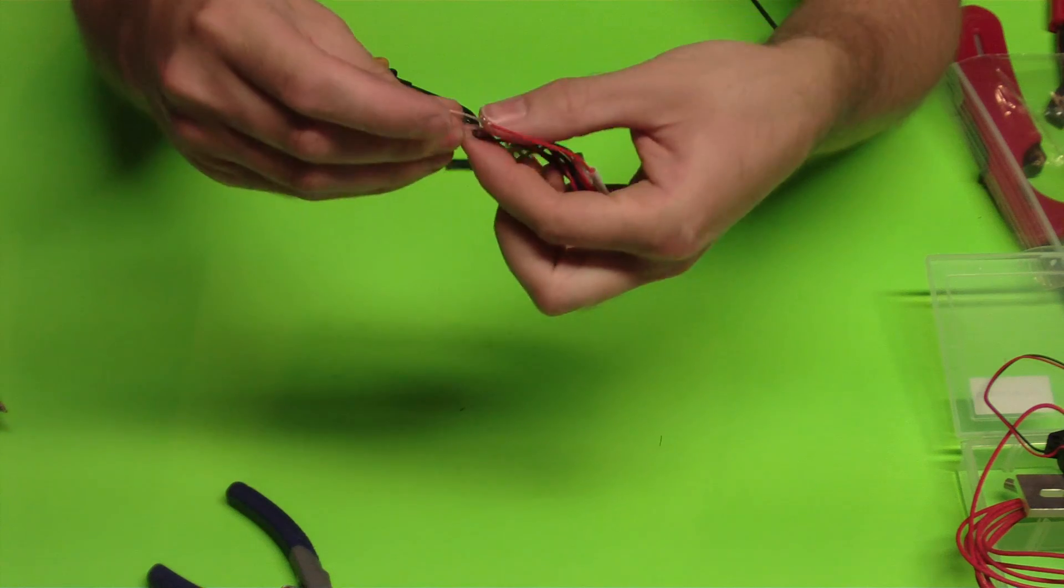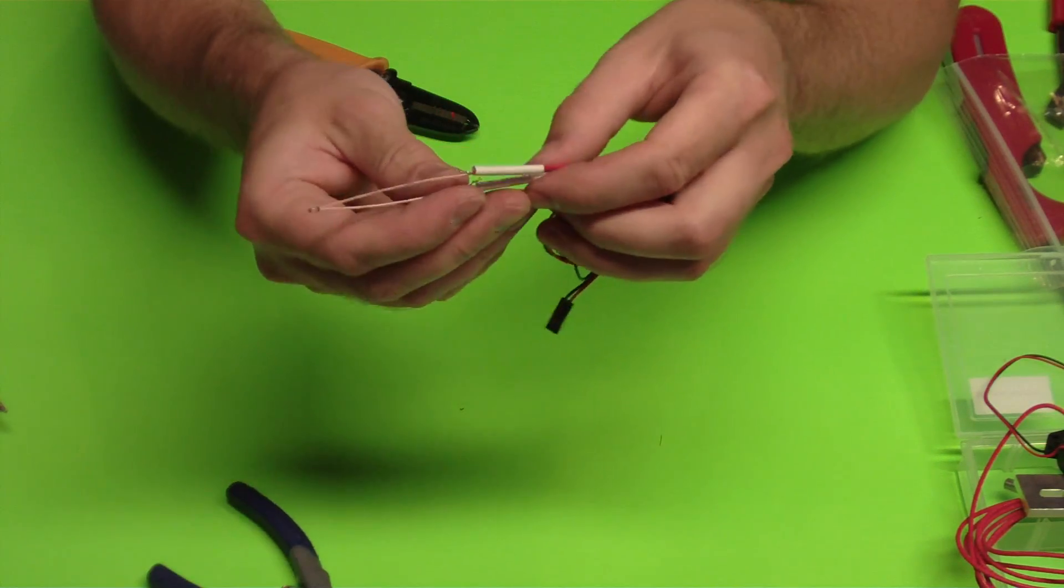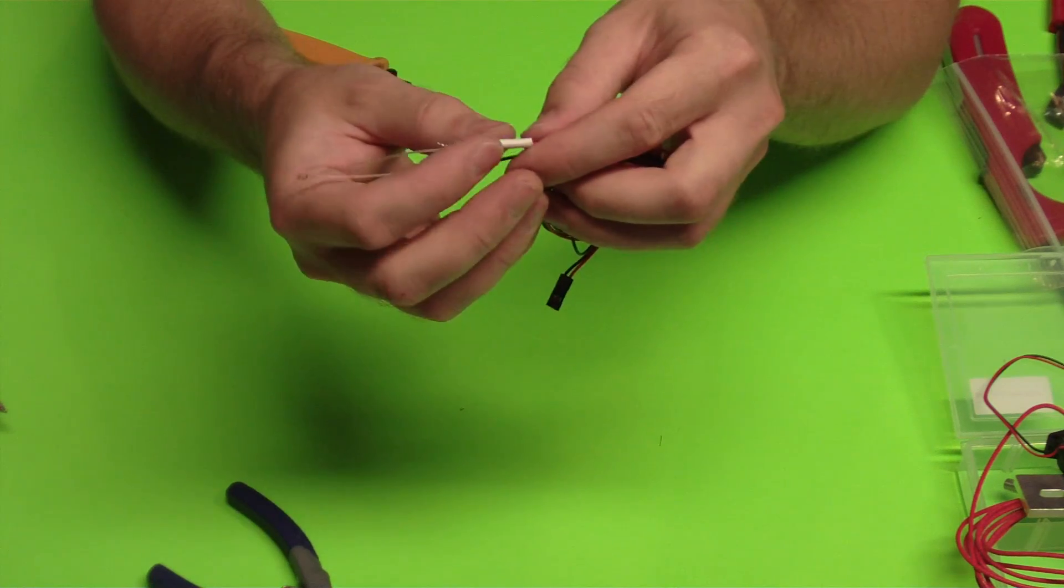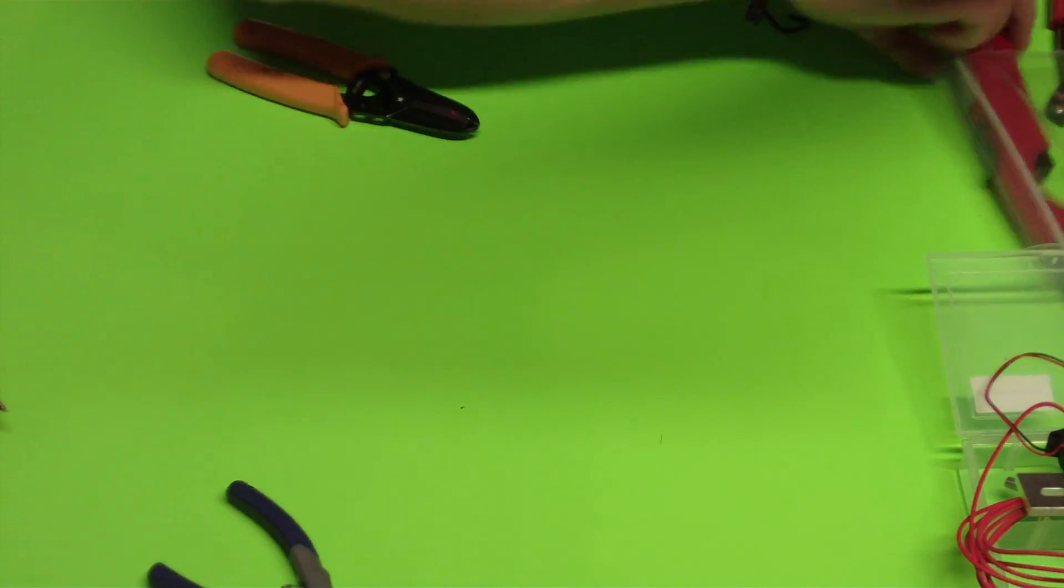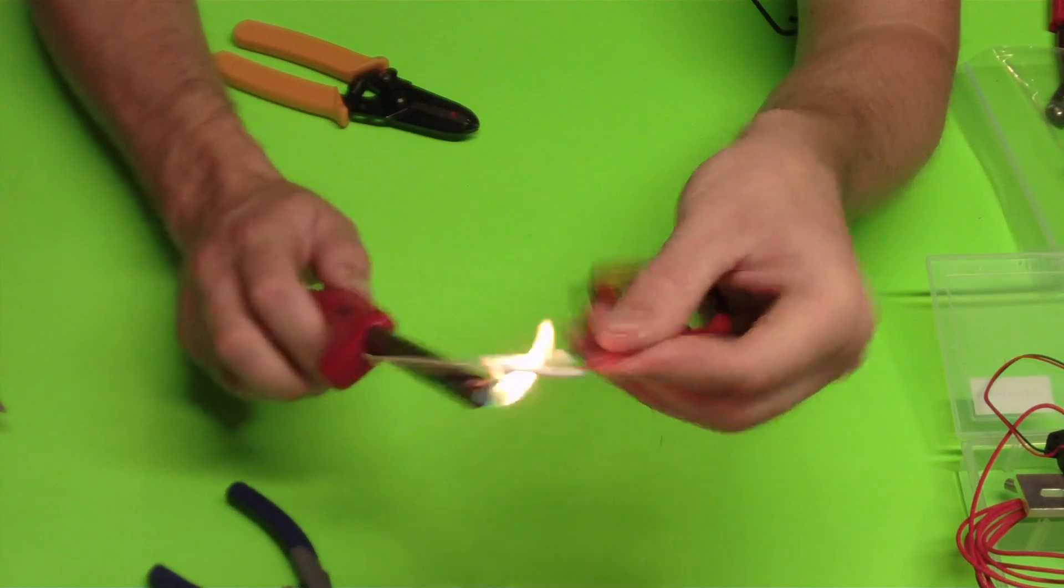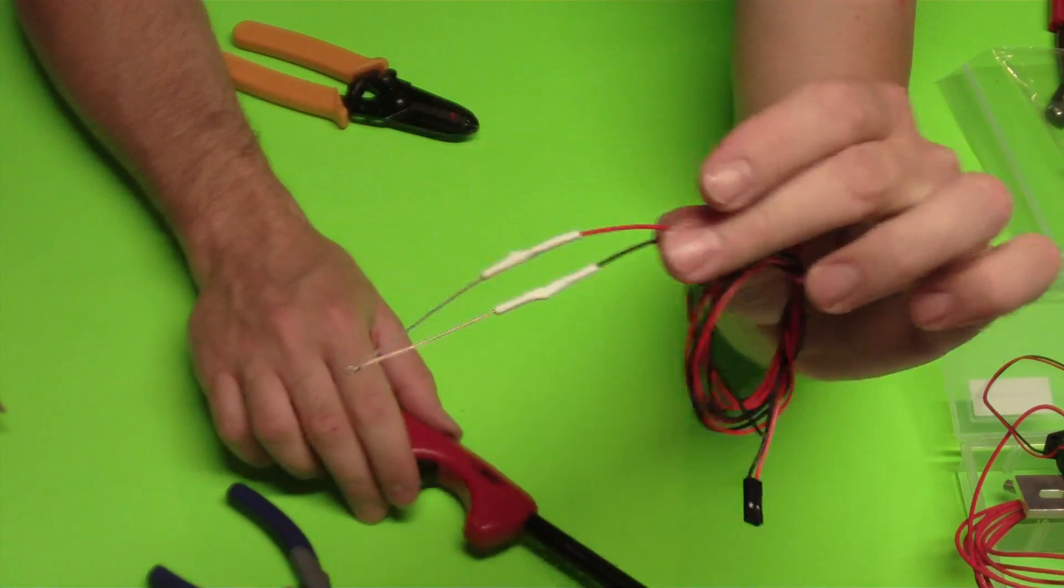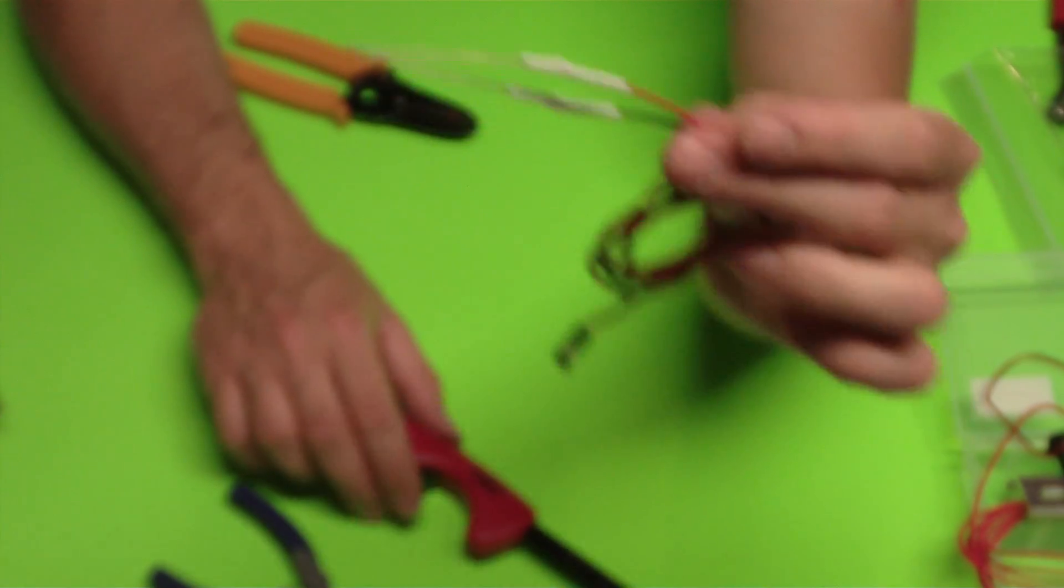So now it's all soldered together. I'm just going to lay those connections flat, put my heat shrink tubing on top of it, and then I'm just going to use a lighter to heat it up and shrink that tubing on it. There is the fully assembled thermistor and the thermistor cable.